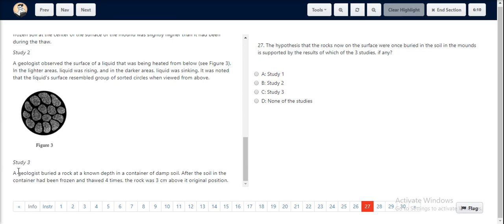Study 3 states that a rock was buried at a known depth, and after the soil had been frozen and thawed in the container 4 times, the rock was 3 cm above its original position.